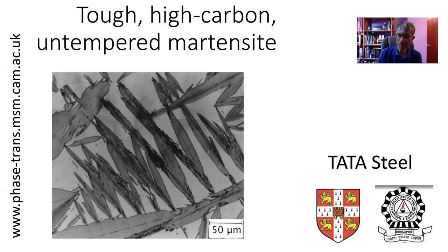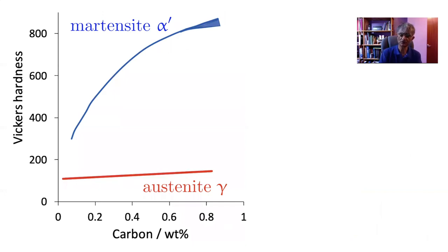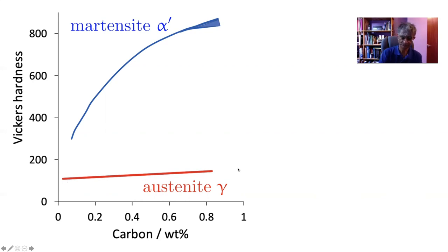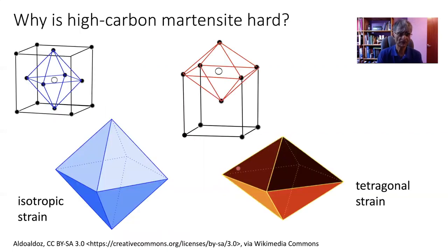I'll explain first the origin of the hardness of martensite in steel. If you plot the hardness versus the carbon concentration, you can see a rapid rise in the hardness of martensite as a function of the carbon concentration, far greater than if you added the same amount of carbon in austenite. The reason for this is the nature of the interstices in which the carbon atoms sit within these two different lattices.